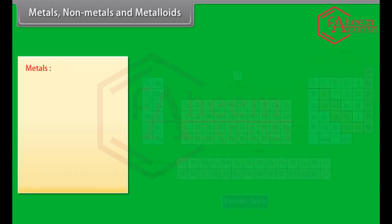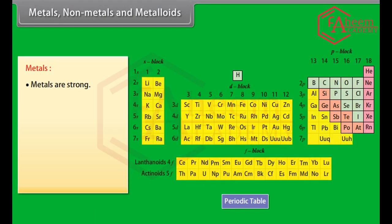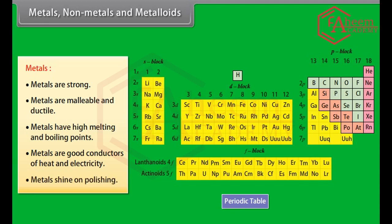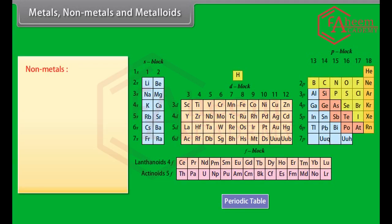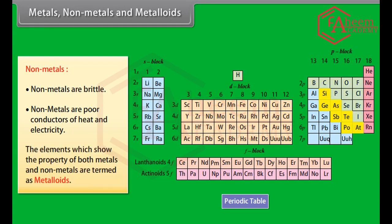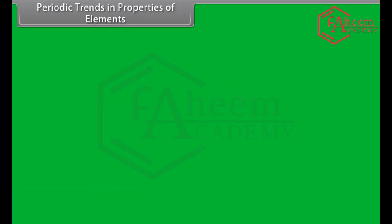Metals, non-metals and metalloids: Metals are strong, malleable and ductile, have high melting and boiling points, are good conductors of heat and electricity, and shine on polishing. Non-metals are brittle and poor conductors of heat and electricity. Elements which show properties of both metals and non-metals are termed metalloids.